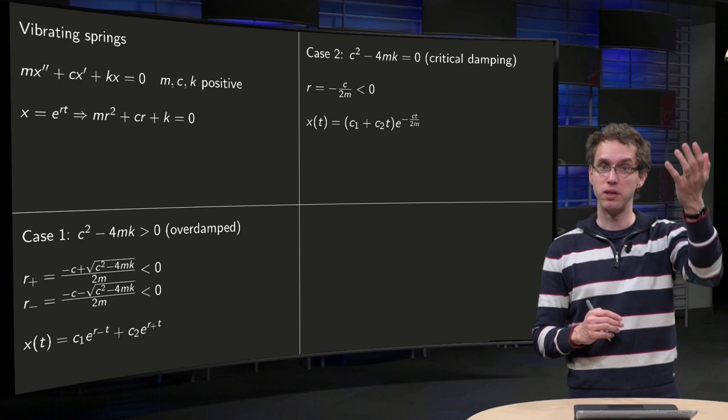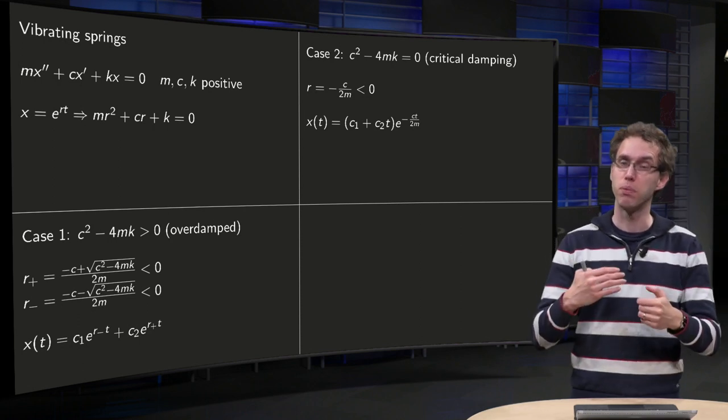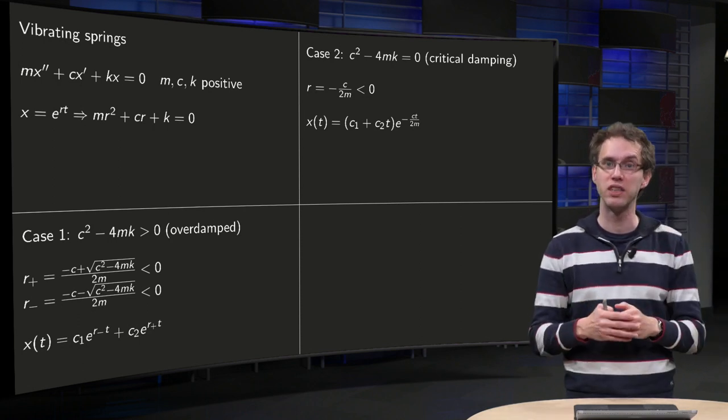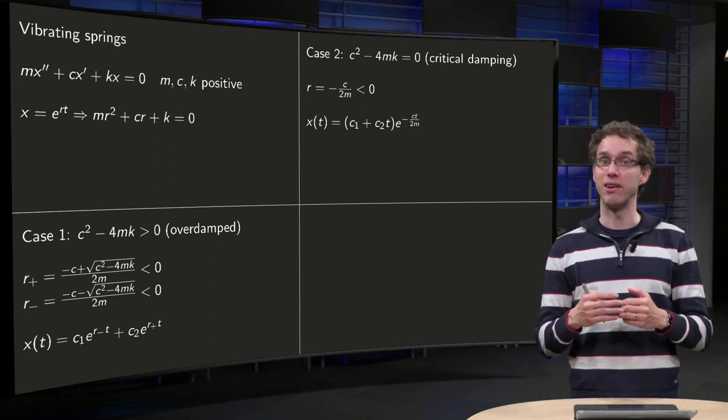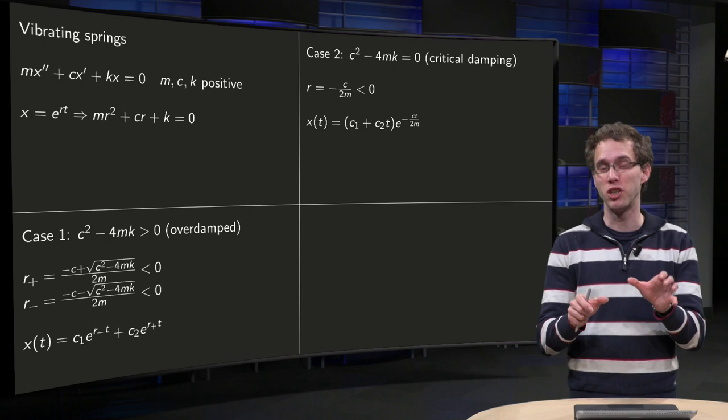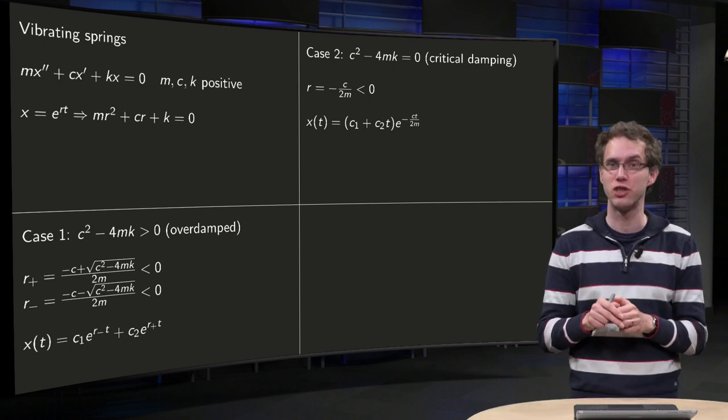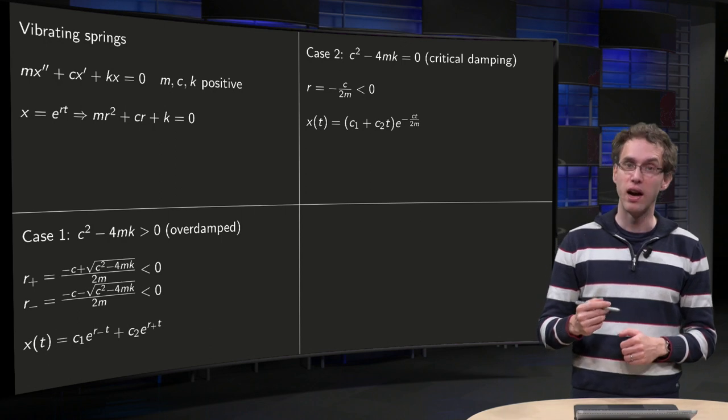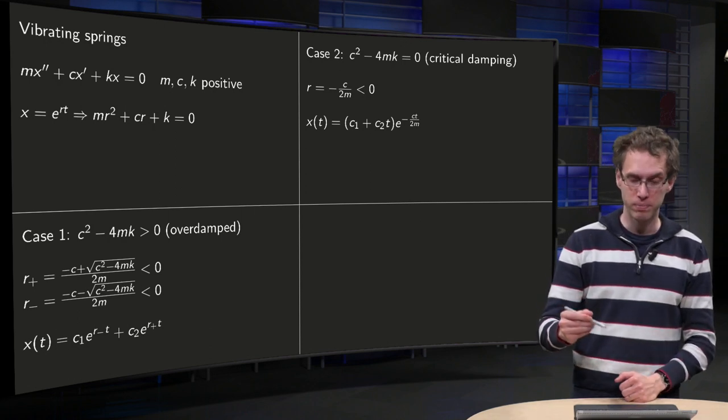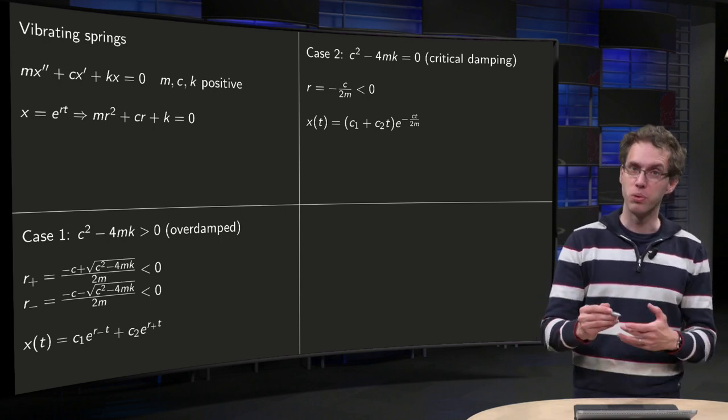Now in the boundary case between c squared minus 4mk positive and negative, we have the zero case, which is a bit special of course, exactly zero. So you encounter that your physical constants are tuned such that you are exactly zero will be difficult, but let's look at it. It's called critical damping.